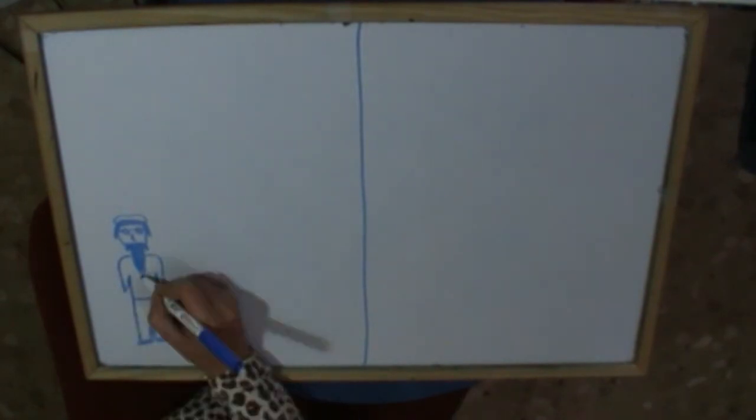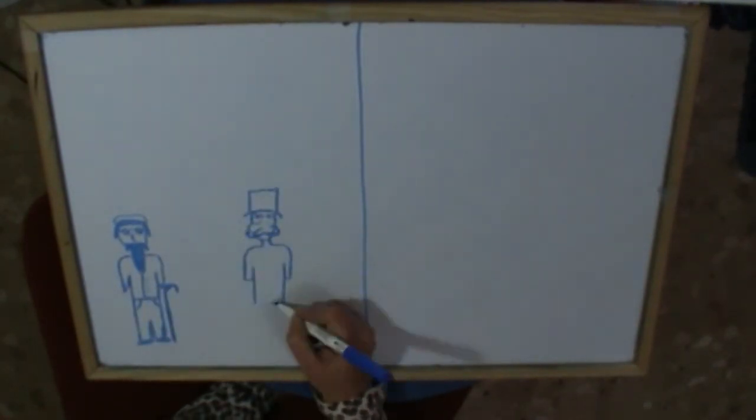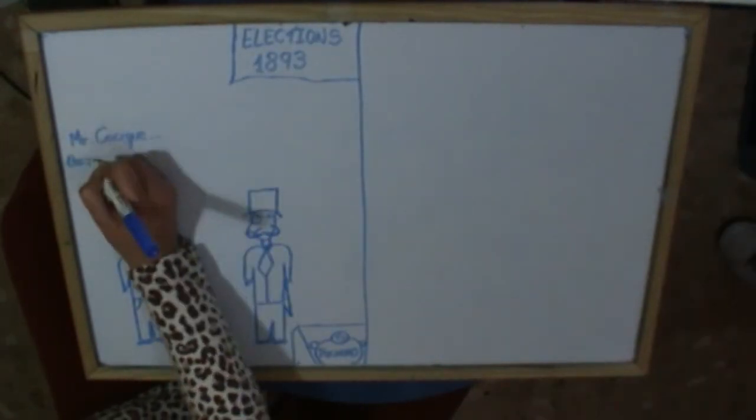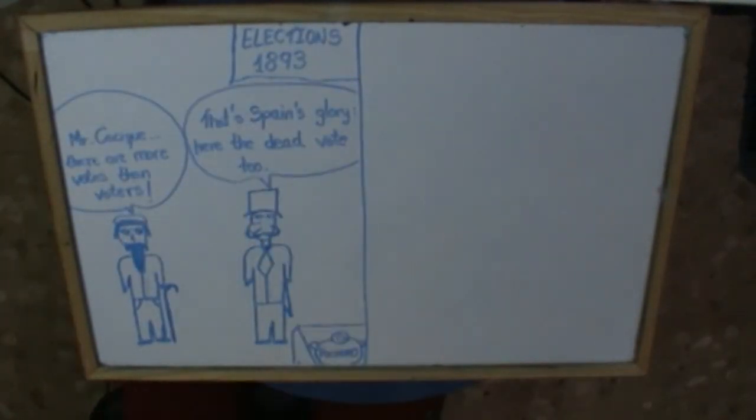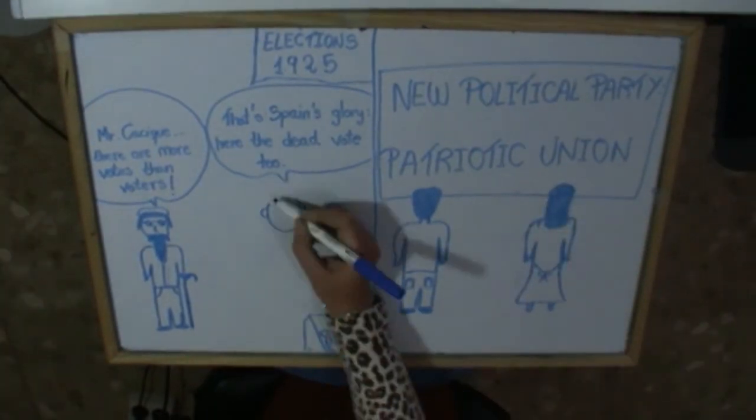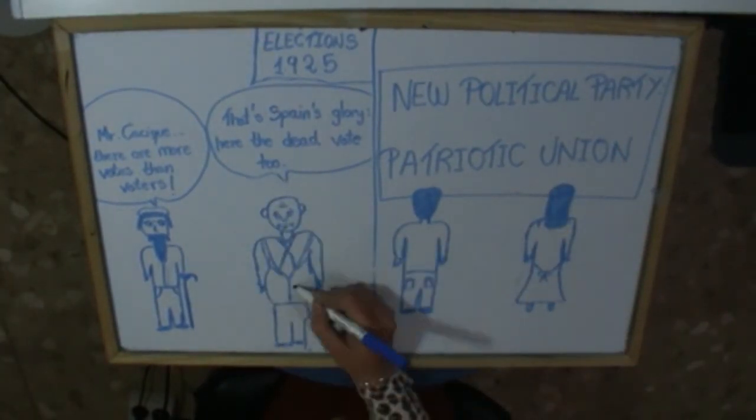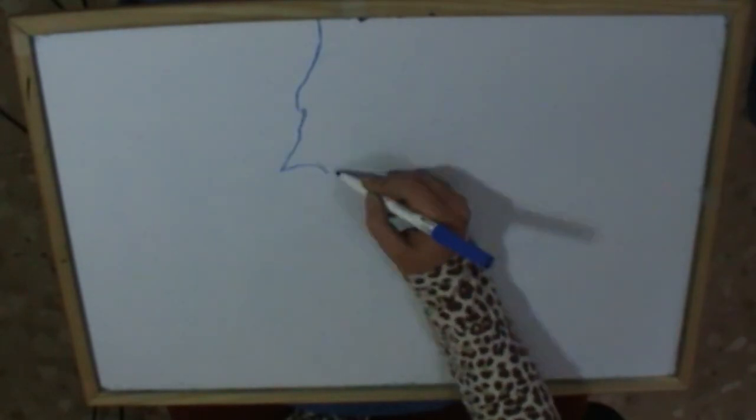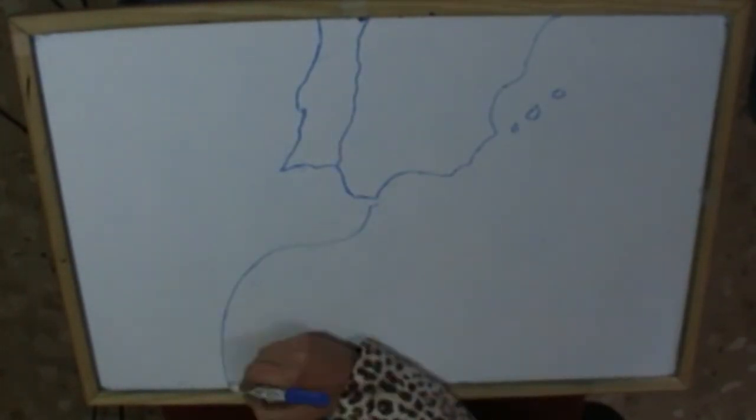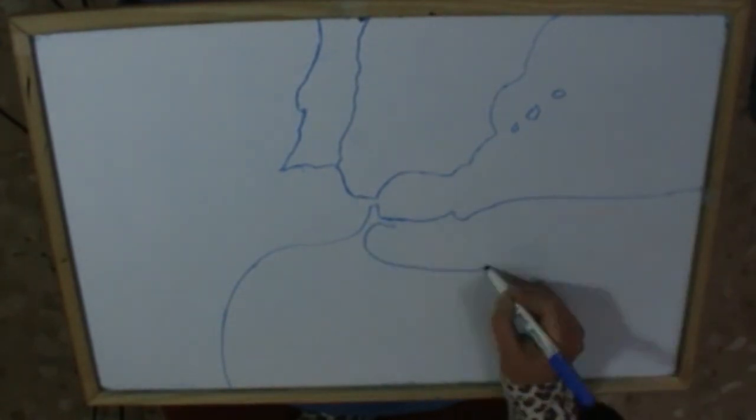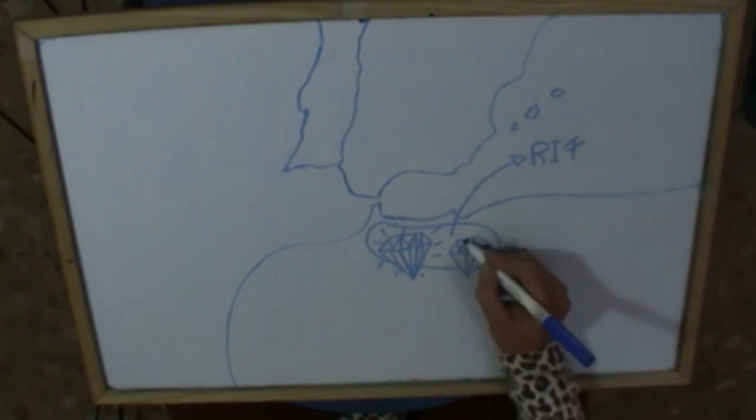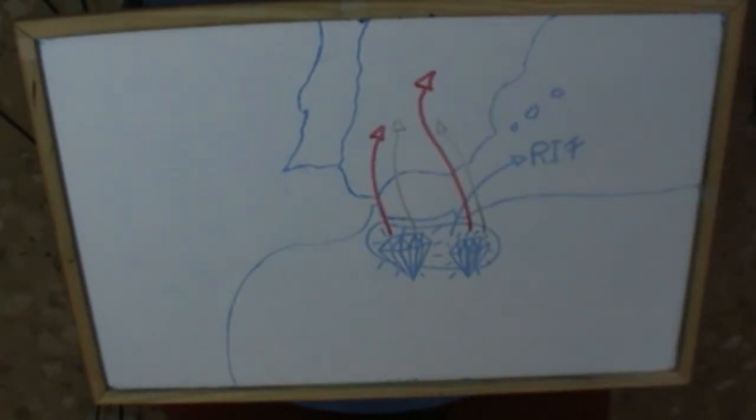Primo de Rivera re-established public order with a rigid control of the opposition unions, but he also wanted to end with the old way of doing politics, caciquismo, and a regime party was created, the Patriotic Union. But the old caciques were replaced by new ones. He had more success in the solution of the problem in Morocco, with the cooperation of France. The landing of Alhucemas in September 1925 allowed Primo de Rivera to control the Spanish protectorate in Morocco.